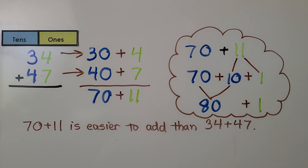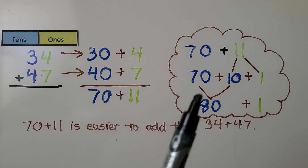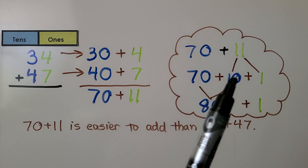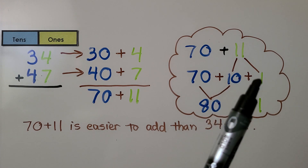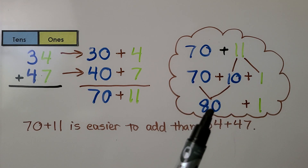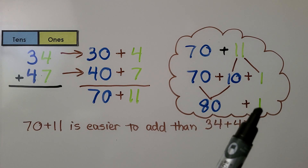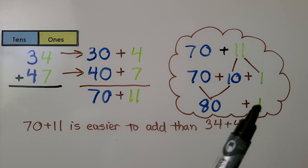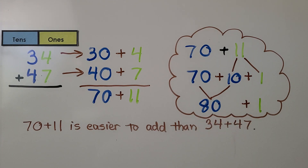Now we have 70 plus 11. The 11 can be broken into a 10 and 1 one. 70 plus 10 is 80. We add the one that's left over and get 81. Notice that 70 plus 11 is easier to add than 34 plus 47.